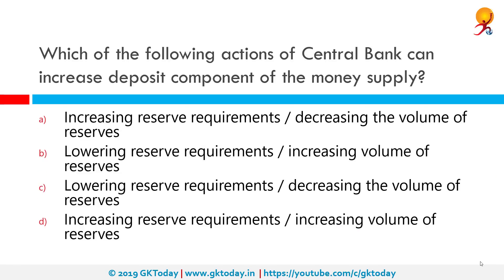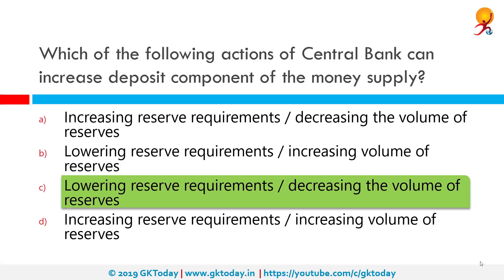Which of the following actions of a central bank can increase the deposit component of the money supply? The correct answer is lowering reserve requirements or decreasing the volume of reserves. The central bank can influence the money supply by modifying reserve requirements, which refer to the amount of funds banks must hold against deposits. By lowering reserve requirements, banks are able to loan more money, which increases the overall supply of money in the economy.